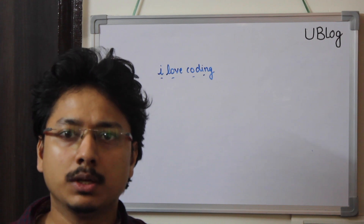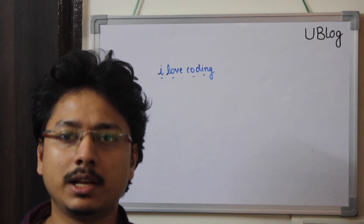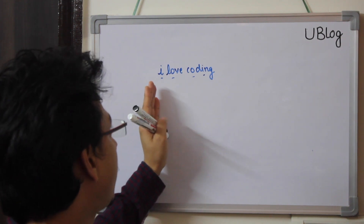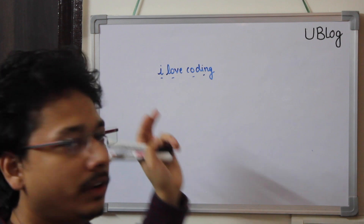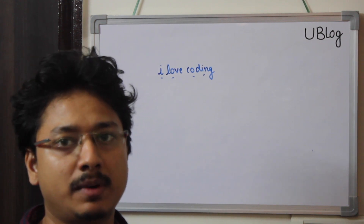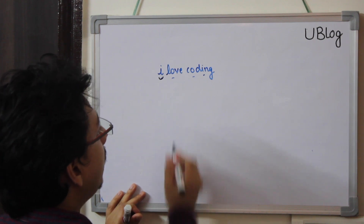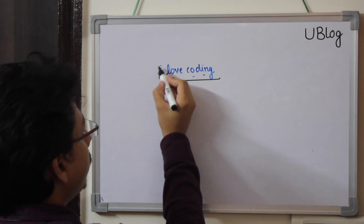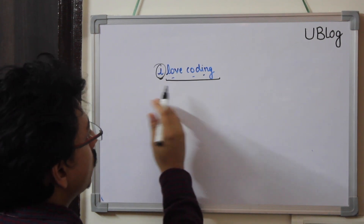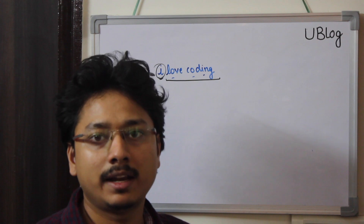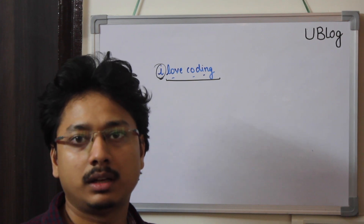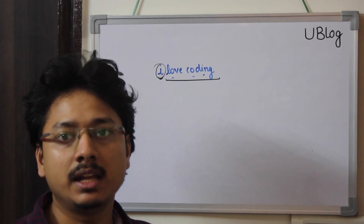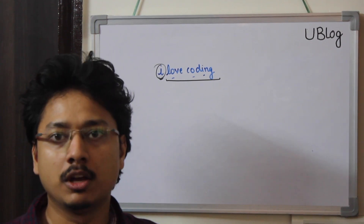How would you approach this question? A nice way is to convert the string into a character array and iterate over it. For every element in the character array, you iterate over all the remaining elements. If at any time I find that my current element is present again, that means there are duplicate elements, so return false. This is the naive approach.